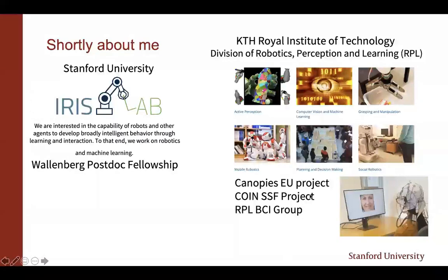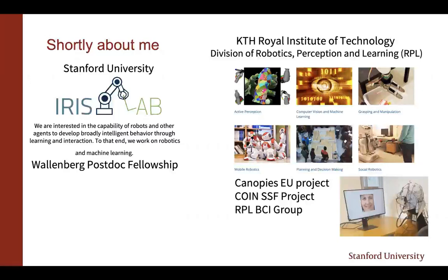I have two ongoing projects at KTH. One is the Canopus EU project, in which we're developing machine learning algorithms for harvesting applications. I also have the COIN project, which is almost finished. In that project, we were interested in understanding co-adaptation between humans and robots in human-robot interaction scenarios. I'm also leading a research group at RPL about brain-computer interfaces. Today my topic is not about brain-computer interfaces, but that's actually a very active research area for me at RPL.